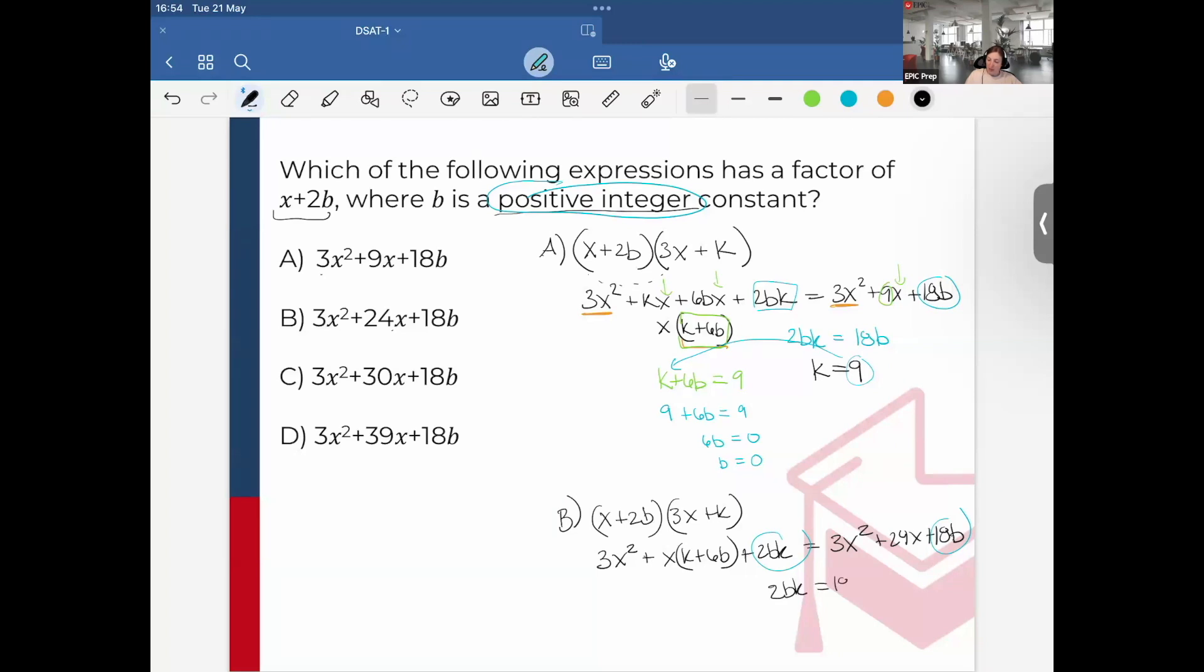So 2bk = 18b, k will equal 9. And then for choice B, I have k + 6b = 24. I do 9 + 6b = 24, so 6b = 15. But b = 15/6, that's a fraction, so it's not an integer.